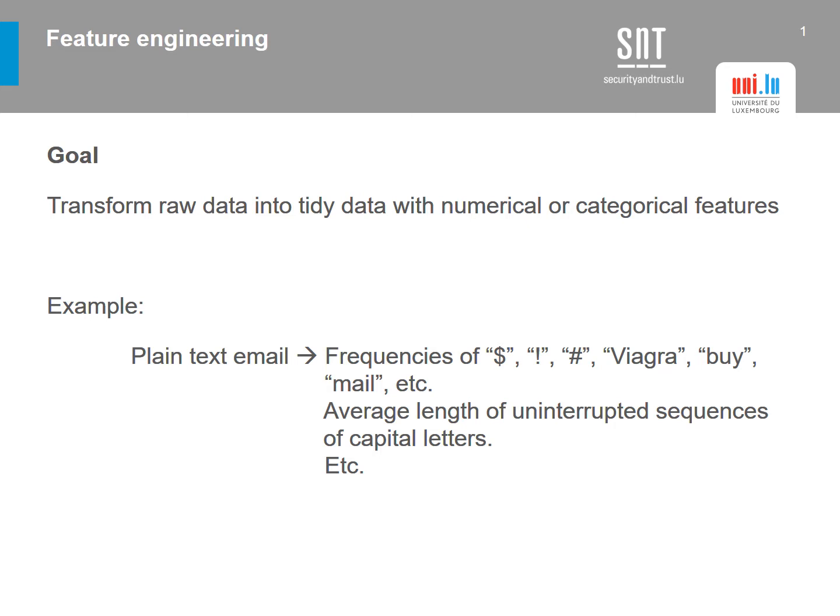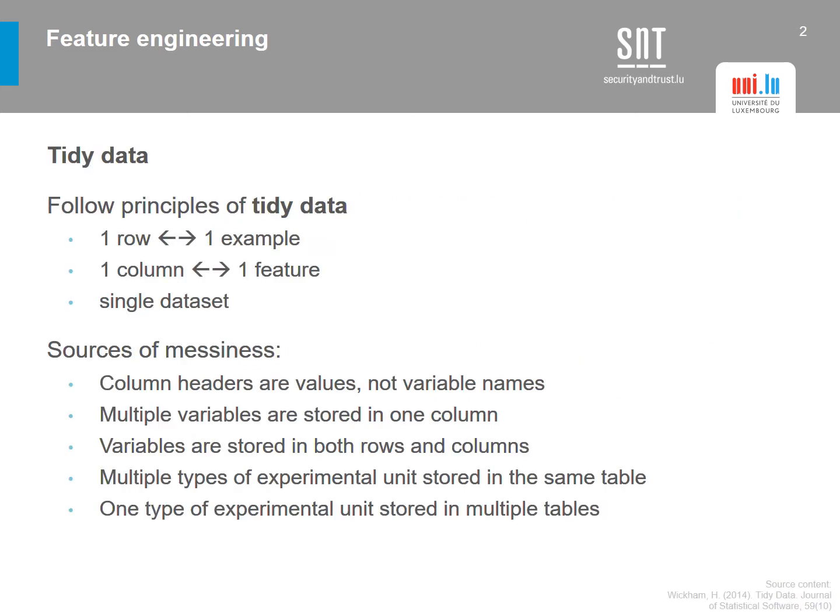We have seen that we need tidy data. The requirement for data to be tidy is that one example corresponds to one row and one row corresponds to one example — a one-to-one correspondence. There should also be a similar one-to-one correspondence between columns and features, meaning a feature should not be split between columns. The third principle is that we need a single dataset. We can think of tidy data as a spreadsheet where each row represents an example and each column represents a feature.